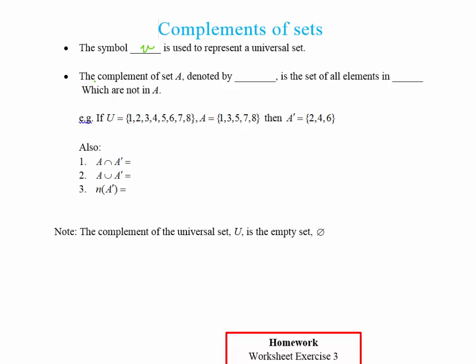So the other bit of notation we have to get used to is the complement of set A. So if we have set A, the complement of that would be A dash. And this is a set of all elements that are in the universal set, which are not in A. So that sounds a little bit confusing. So let's look at it in terms of an example.